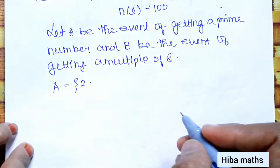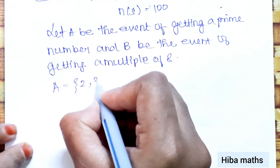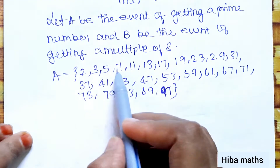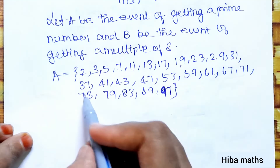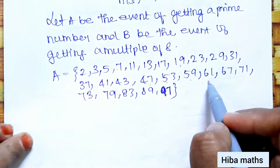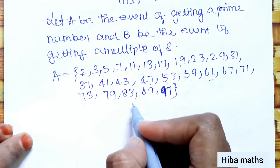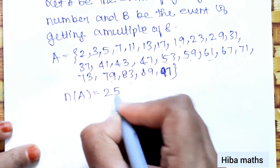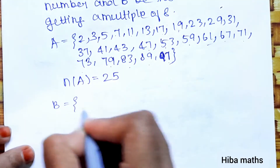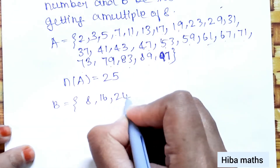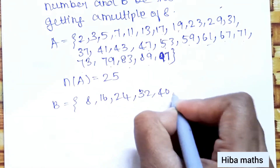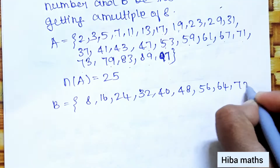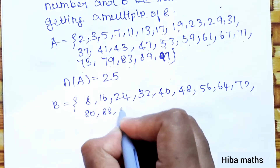Now we find n(B), the multiples of 8 up to 100: 8, 16, 24, 32, 40, 48, 56, 64, 72, 80, 88, 96. So n(B) = 12.